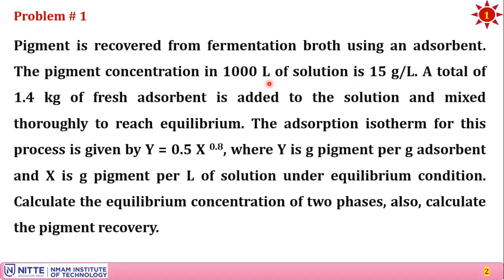The summary of Problem 1: you have a pigment in the fermentation broth and need an adsorbent to remove the pigment. The quantity of fermentation broth is 1000 liters and the concentration of the pigment is 15 g/L. You have added 1.4 kg of adsorbent and mixed it. The process is under equilibrium condition — it's a one-stage adsorption governed by the Freundlich equation: y = 0.5 * x^0.8, where y and x are the equilibrium compositions.